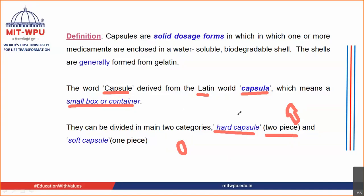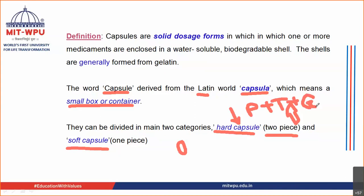Another difference is that the capsule shell in a hard gelatin capsule is hard in nature, whereas in a soft gelatin capsule it is soft — achieved by addition of plasticizers. Hard gelatin capsules are usually preferred for powders, powders plus tablets, or granules — basically for solid materials.